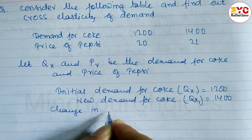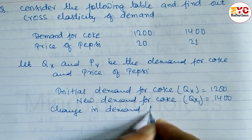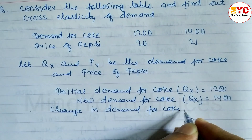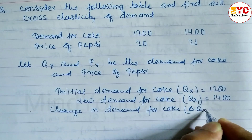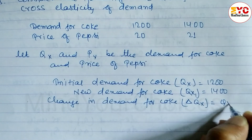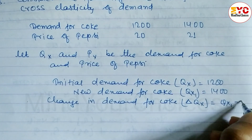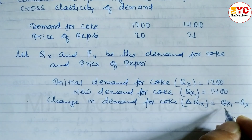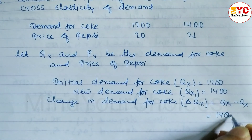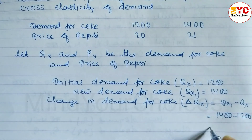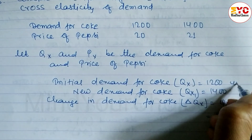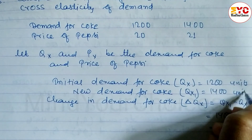The change in demand for Coke, denoted by delta Q X, is calculated as Q X1 minus Q X — that is, new demand minus initial demand for Coke. So 1400 minus 1200 equals a change of 200 units.